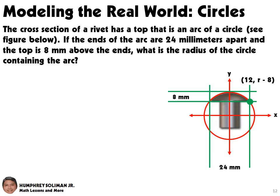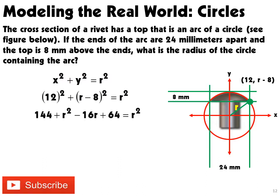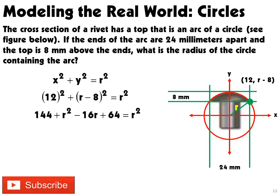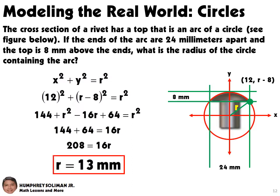Using the equation x² + y² = r², we will substitute 12 for x and r minus 8 for y, and then we solve for r. This will give us 144 + r² − 16r + 64 = r². Simplifying, this will give us the radius equal to 13 mm.